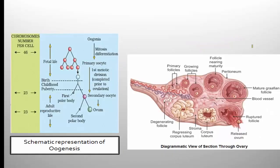Looking at a transverse section of the ovary, you can see smaller cells — these are primary follicles — growing and converting into secondary follicles and then tertiary follicles, and eventually into the mature follicle. This conversion is influenced by the pituitary hormone FSH, follicle-stimulating hormone.